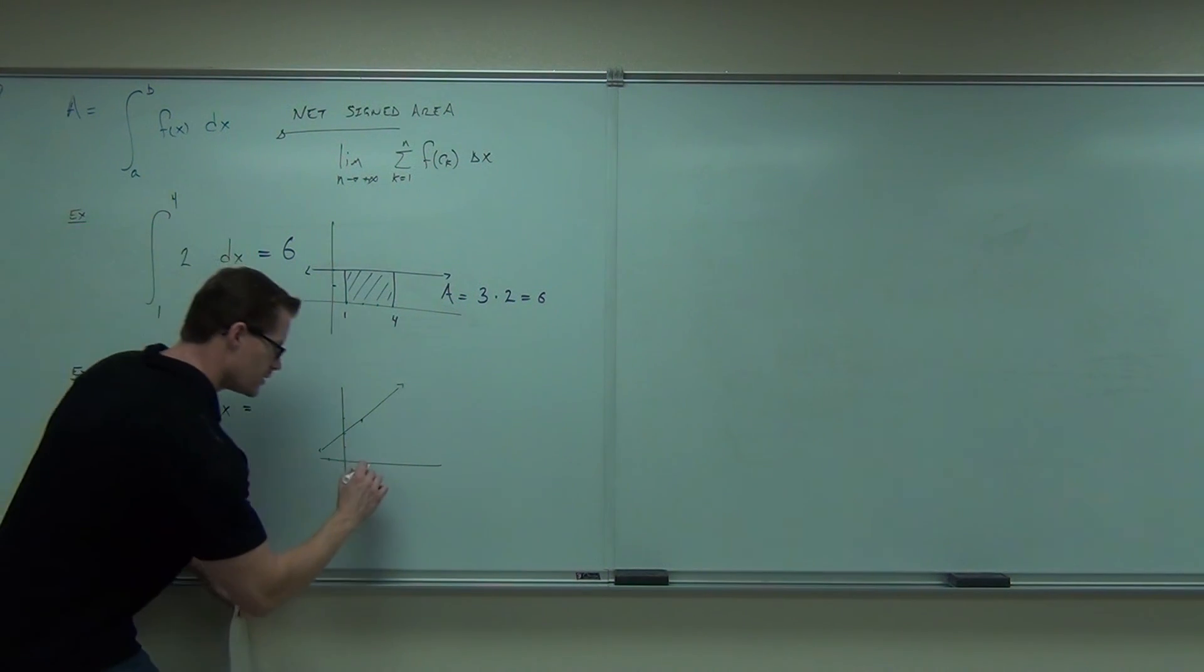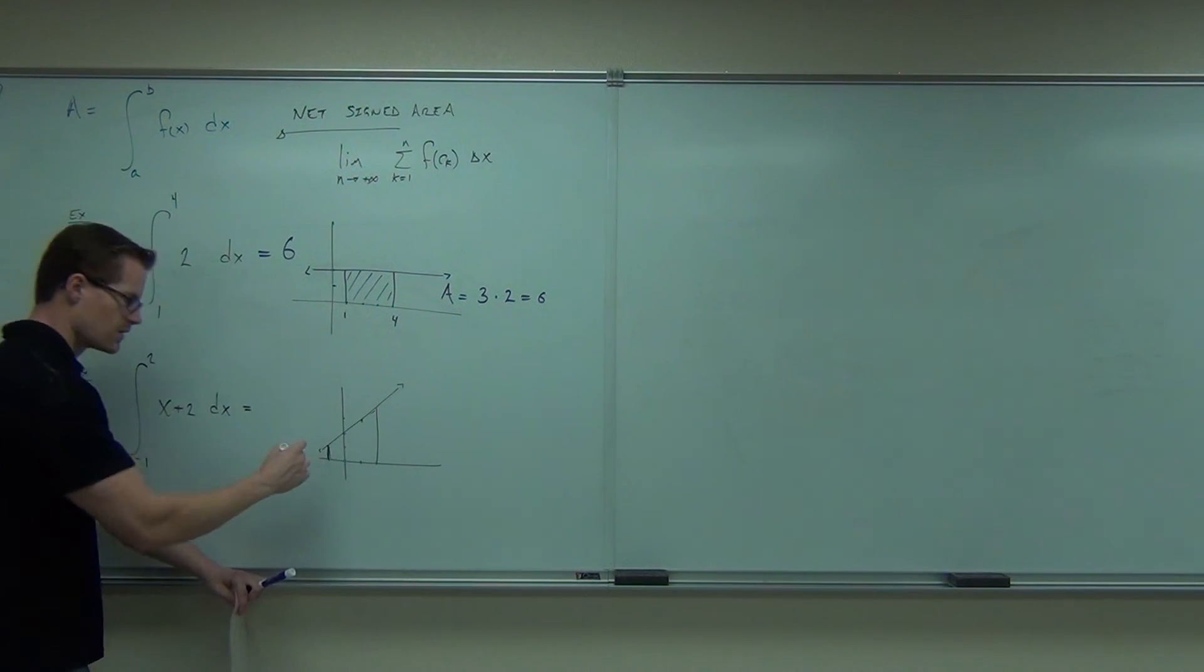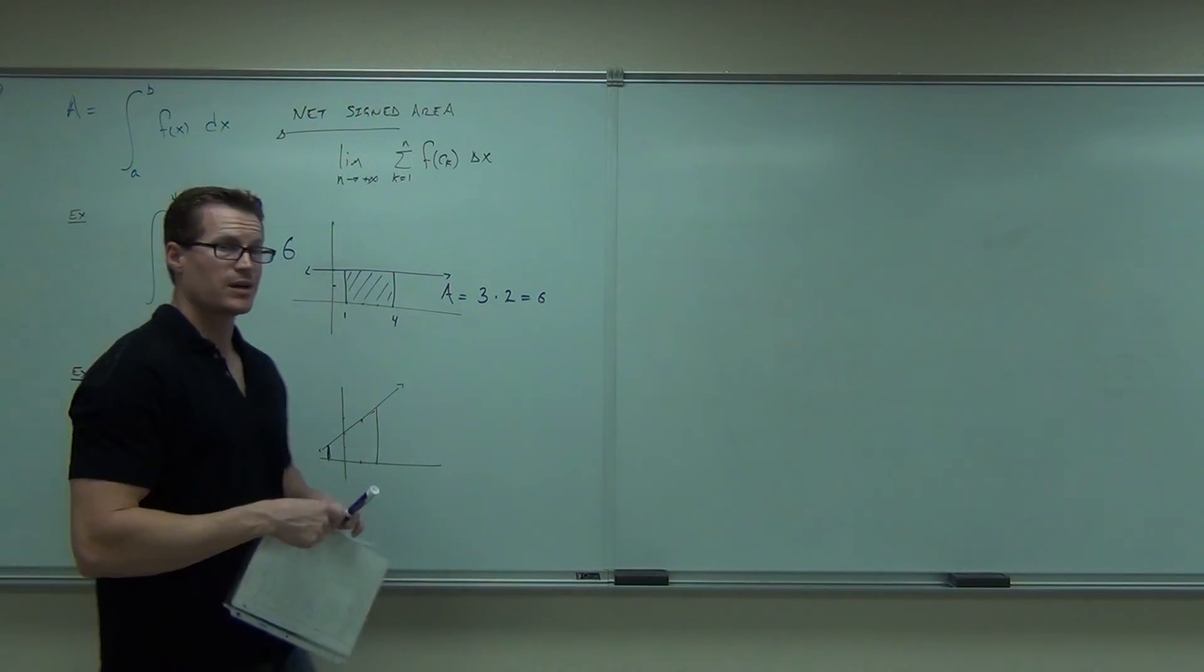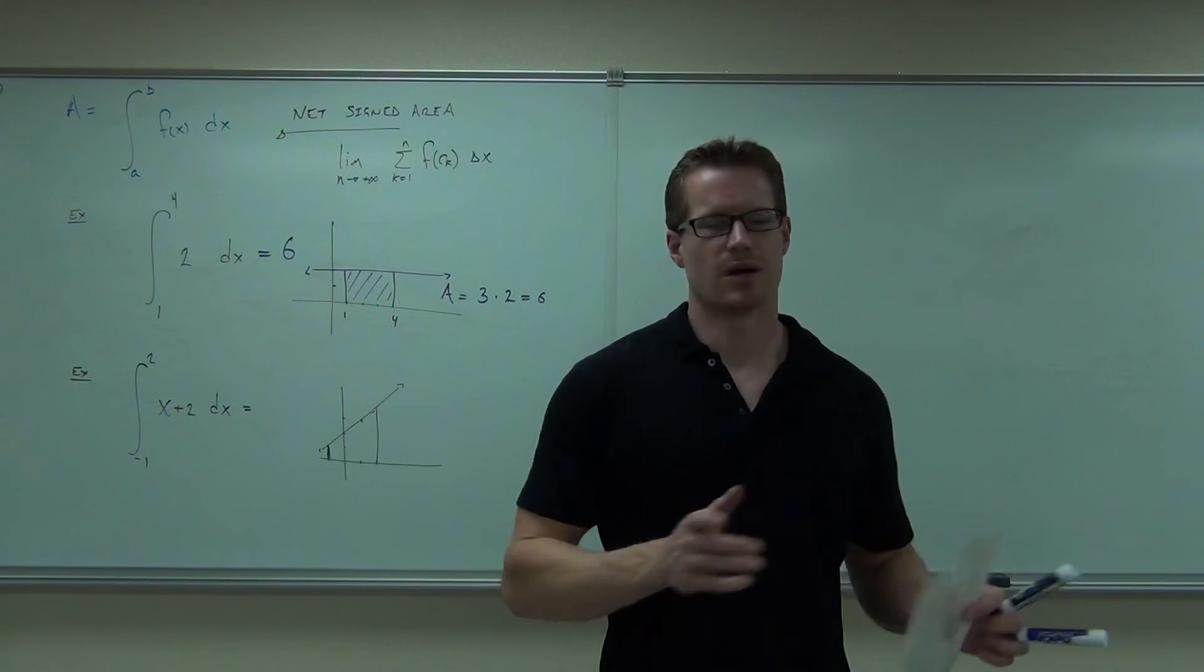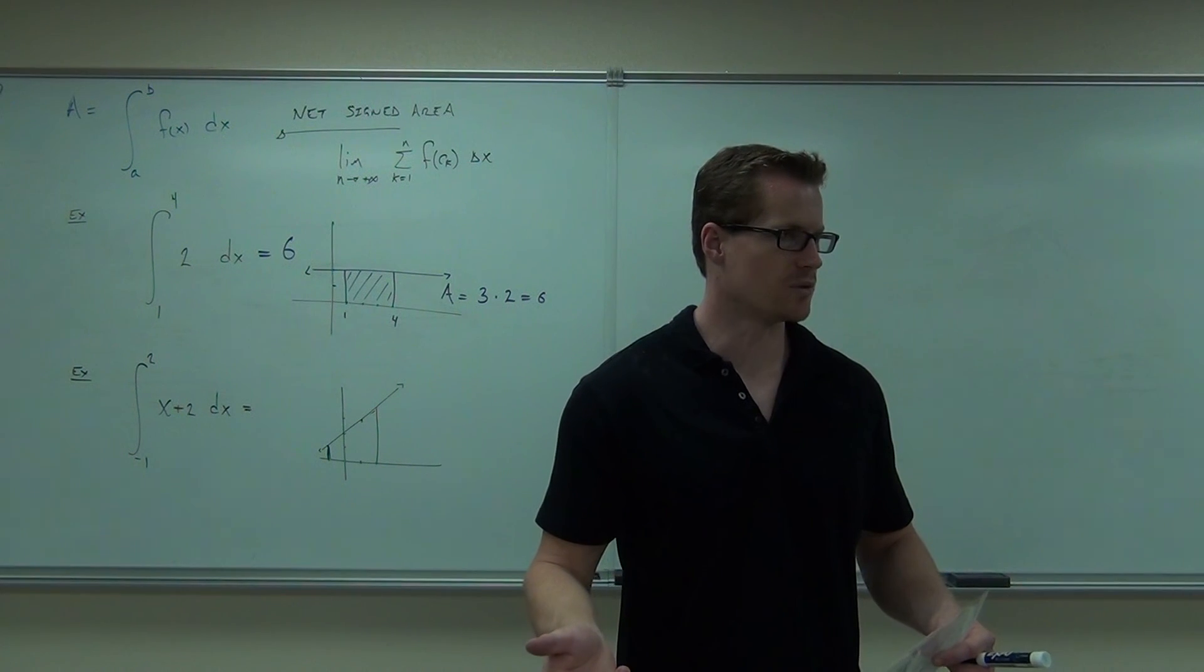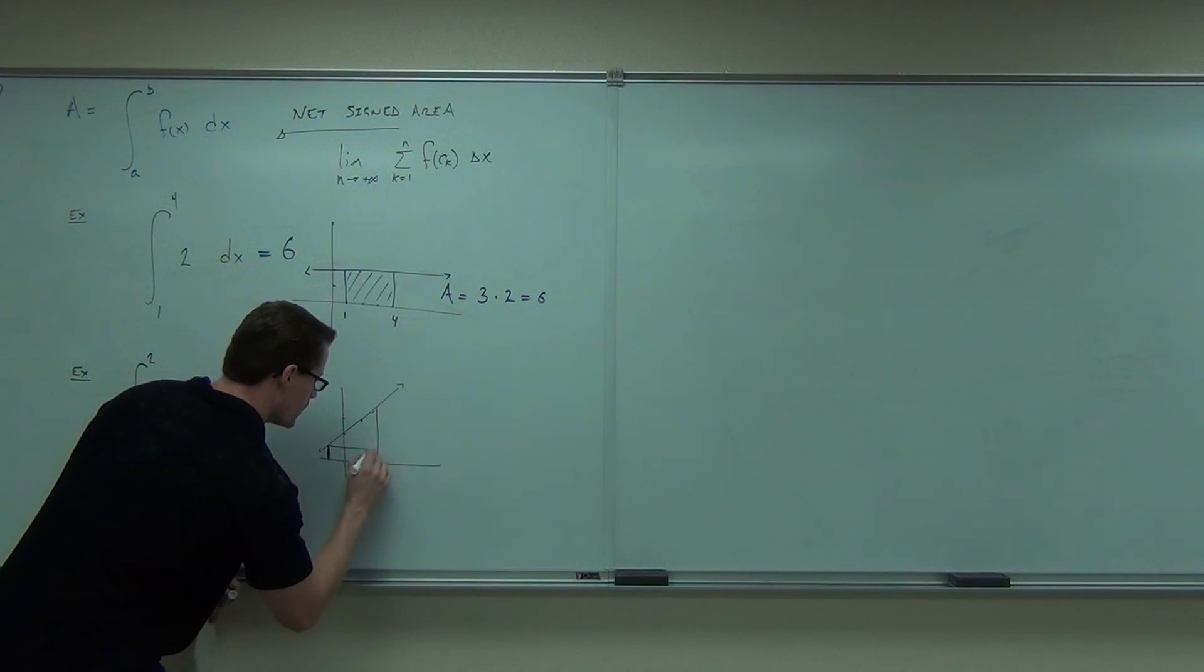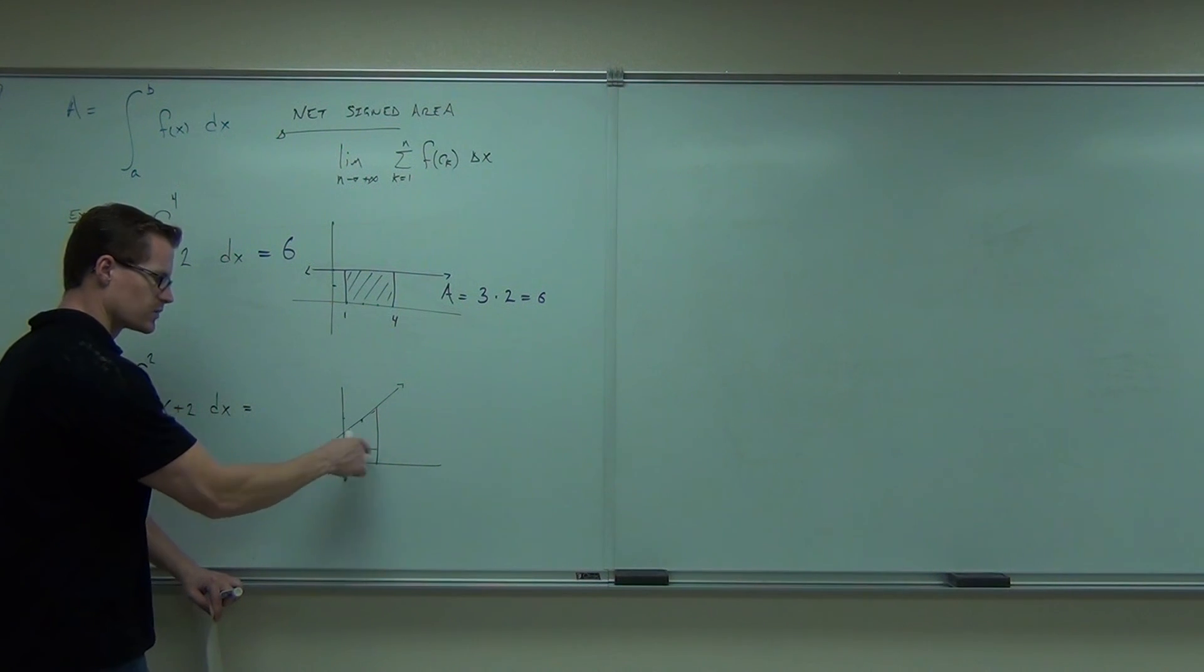And I'm going to go from negative one to two. And this is the area that I would like to represent, is the area of this region. How do you find an area of that region? Could you do it? Geometrically, could you do it? Yeah. How might you do it? Split it up as a triangle. Probably a triangle and a rectangle is how I would do that. So maybe break this one off right here. You okay with that?